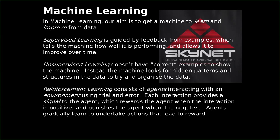The other side is unsupervised learning, where we don't have correct examples to show the machine — often because we don't know the answers. Instead, the machine looks for hidden patterns and structures to organise the data. It might separate it out into various groups. Topic modelling in natural language processing is an example — separating texts into groups, looking for similarities and grouping similar things together.